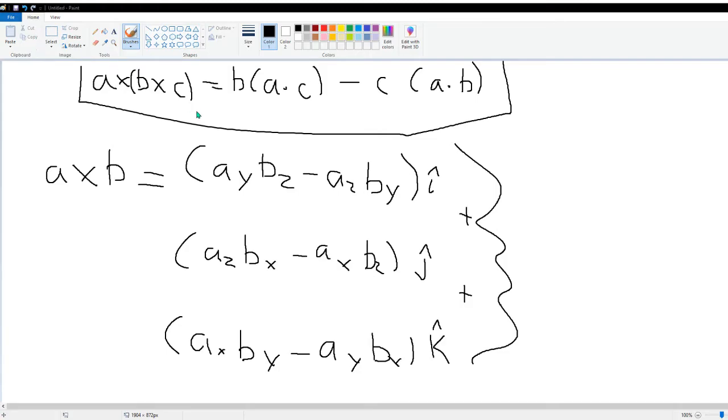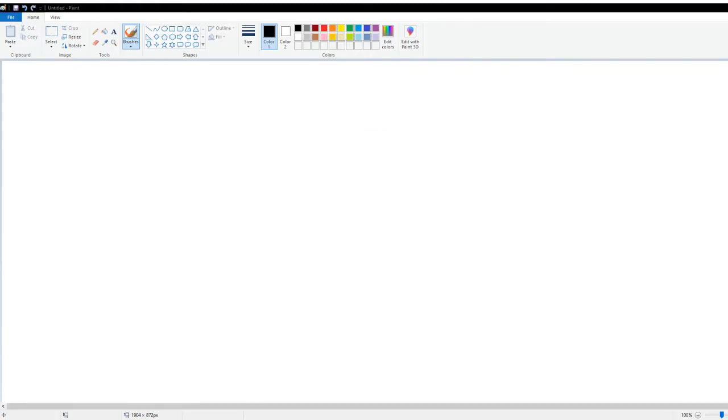The much quicker way is to use the Levi-Civita symbol, which is defined in chapter 10 of Boas. Just a quick reminder: we have epsilon_ijk equal to 0 when i equals j, j equals k, and k equals i. Then it's equal to 1 for even permutations and negative 1 for odd permutations of the subscripts.